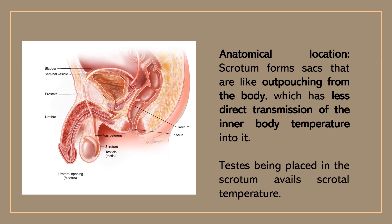Scrotal temperature is cooler than the core body temperature. The first physiological explanation is anatomical location. The scrotum forms sacs that are like outpouchings of the body, which have less direct transmission of the inner body temperature into them. So the testis, being placed in the scrotum, enjoys a scrotal temperature that is 2 to 3 degrees centigrade less than the core body or abdominal temperature.